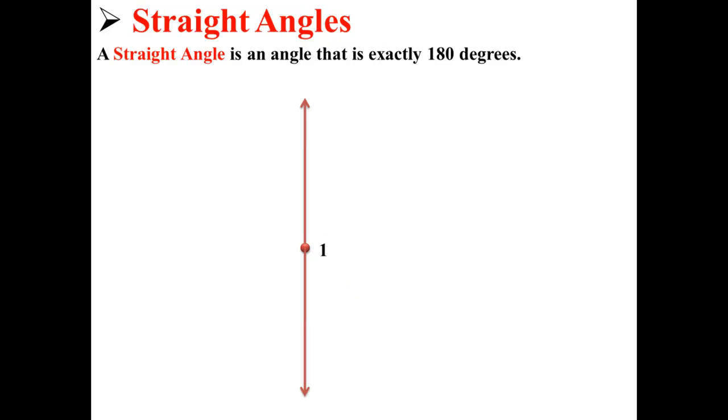And finally we have a straight angle. A straight angle is an angle that has a measurement of exactly 180 degrees. Here angle 1 is a straight angle.